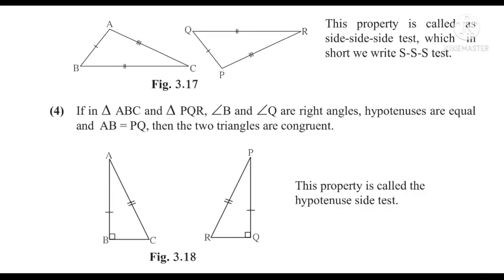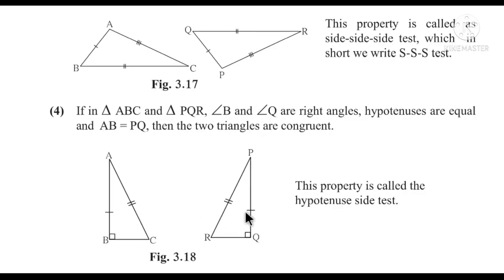Fourth test: Here we have two right-angle triangles. In triangle ABC and triangle PQR, angle B and angle Q are right angles, so both are right-angle triangles. Hypotenuse AC ≅ hypotenuse PR, and side AB ≅ side PQ. Therefore, two triangles are congruent by the Hypotenuse-Side test.